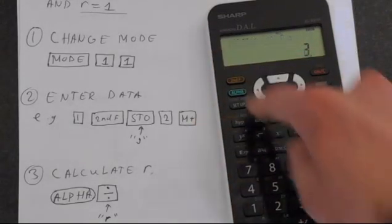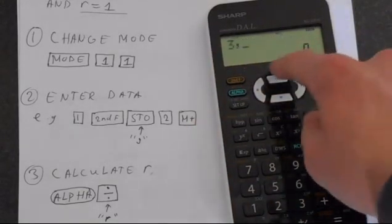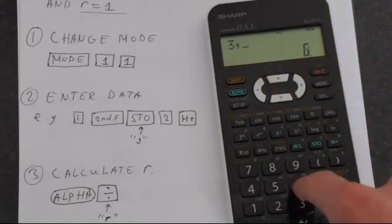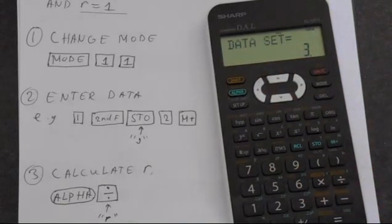And the last point is 3, 2nd function, STO, comma, 6, and M plus to save.